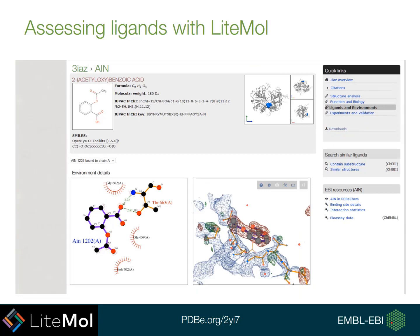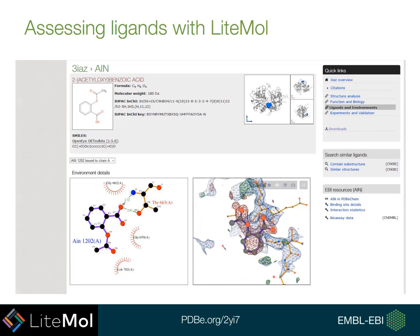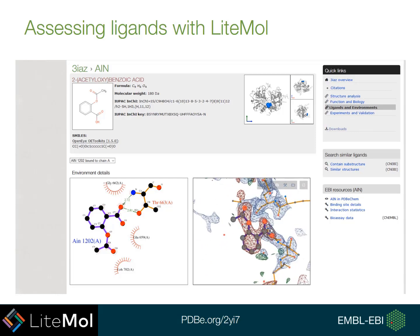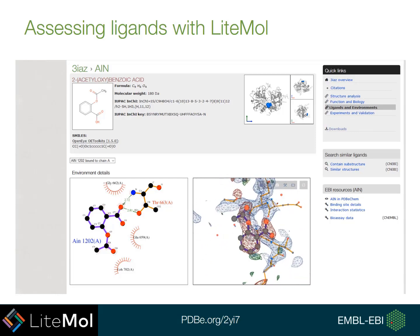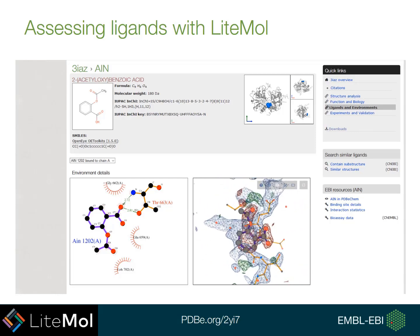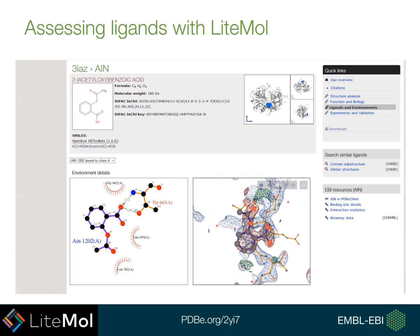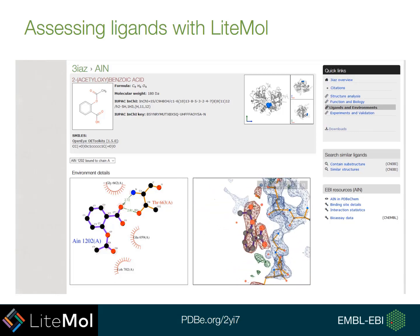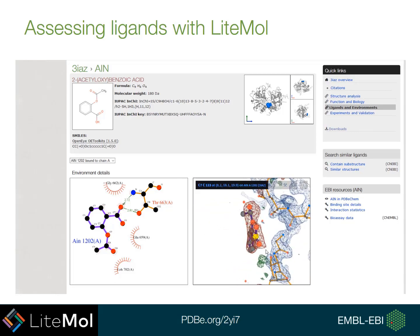Here's an example of how you might assess ligands using Lightmole. For entry 3IAZ and the ligand AIN, you can see in the Lightmole viewer that there's a lot of red density surrounding this ligand. This suggests that there's not much data to back up the modelling of this ligand, which is something important to bear in mind when you're looking at ligands.